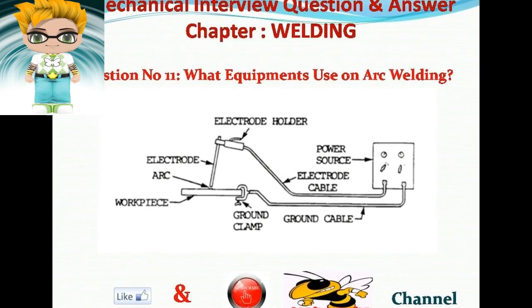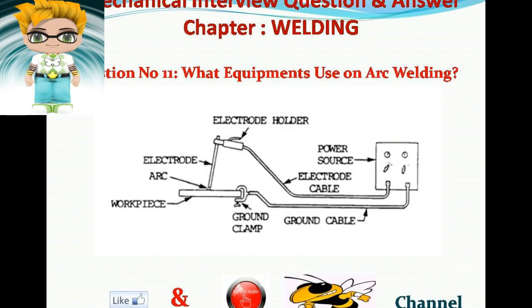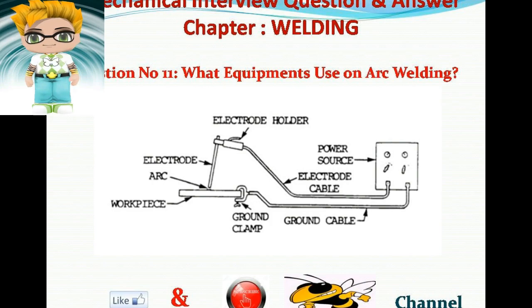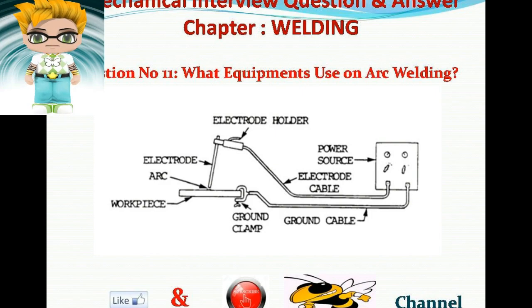Question number eleven: What equipment is used in arc welding? Answer: Arc welding equipment includes: constant current welding power supply, electrode holder, electrode lead and its terminals, ground clamp, work lead and its terminals, and welding electrodes.